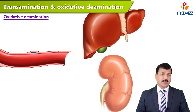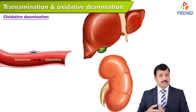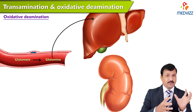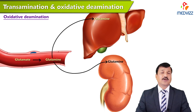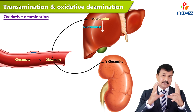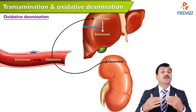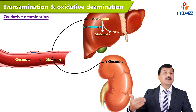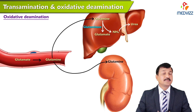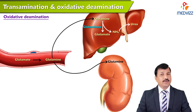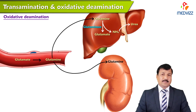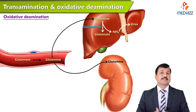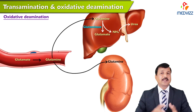Glutamine is carried in the blood to the liver and to the kidney. In the liver, specifically in the mitochondria, glutaminase enzyme breaks glutamine into glutamate and releases ammonium ion, which goes into the urea cycle. The same reaction also occurs in the kidney. Glutamate is then further processed by oxidative deamination.